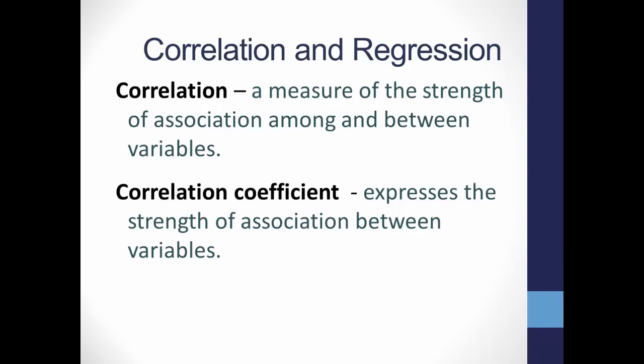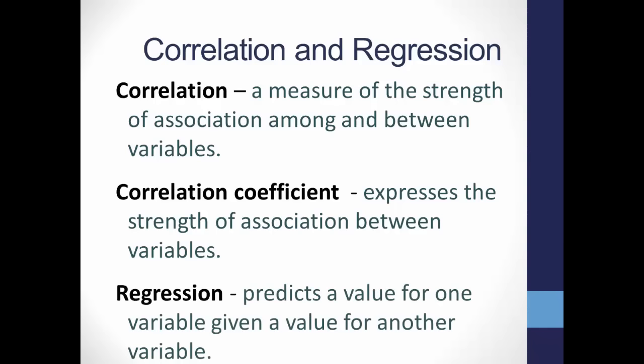Just knowing that a relationship exists between variables may not be enough. If you want to predict the value for one variable based upon the value of another variable, you will need to use regression analysis. With correlation, we are just looking for an association or connection between random variables. With regression, you are looking to see that if you change one variable — a fixed variable — you can predict a change in the other random variable.